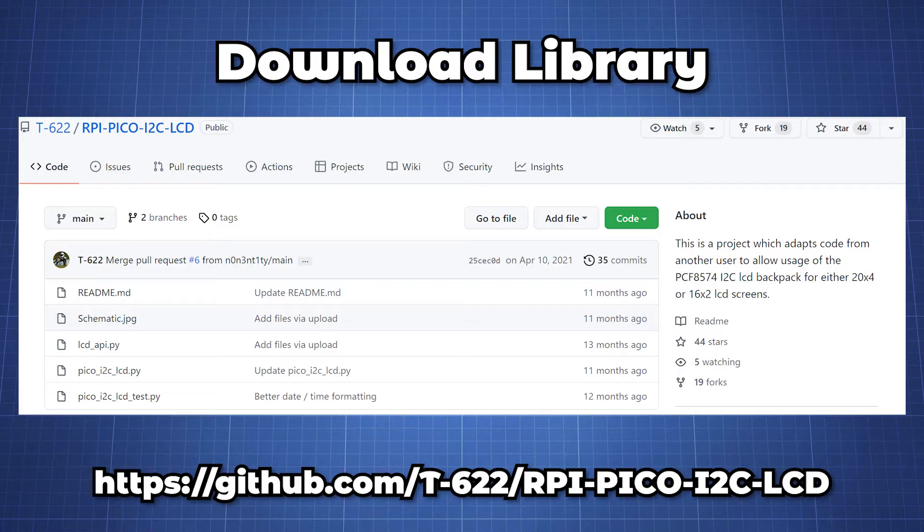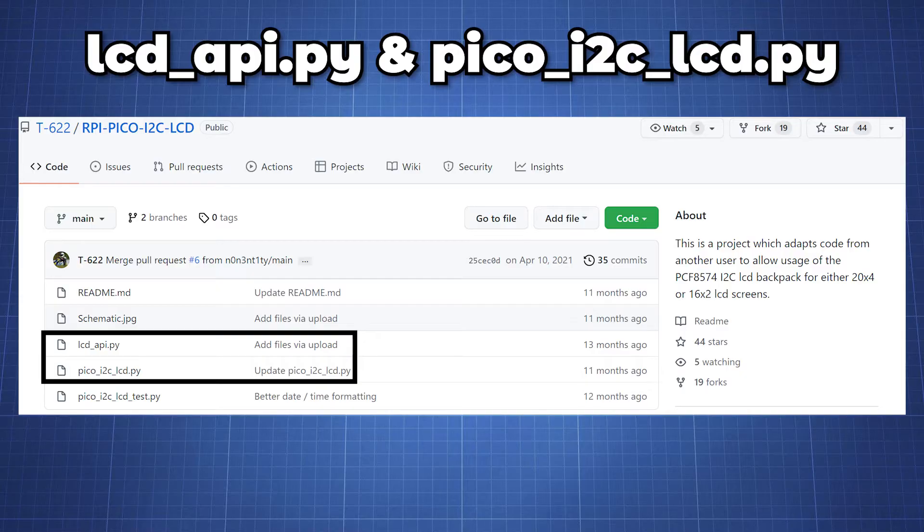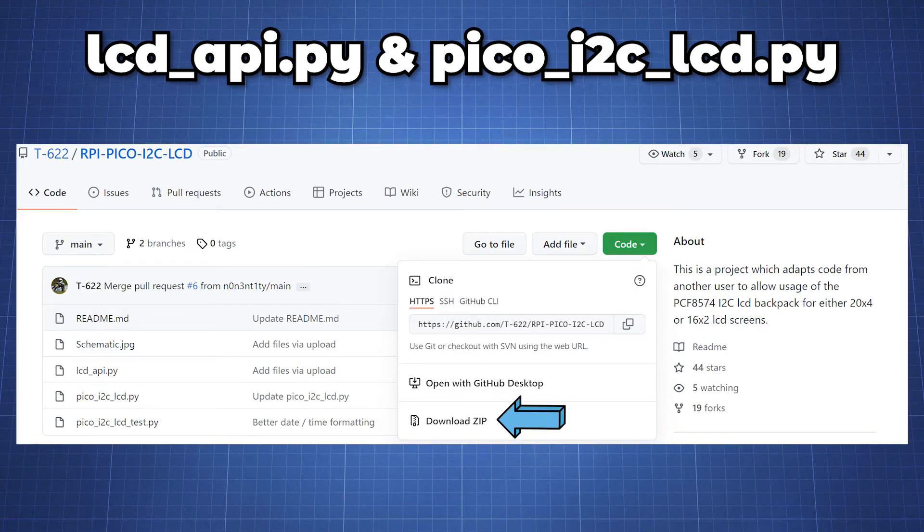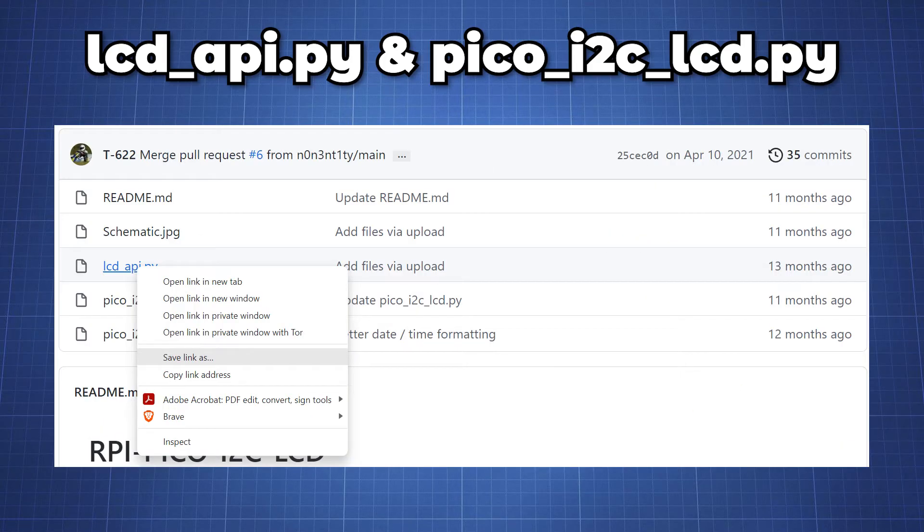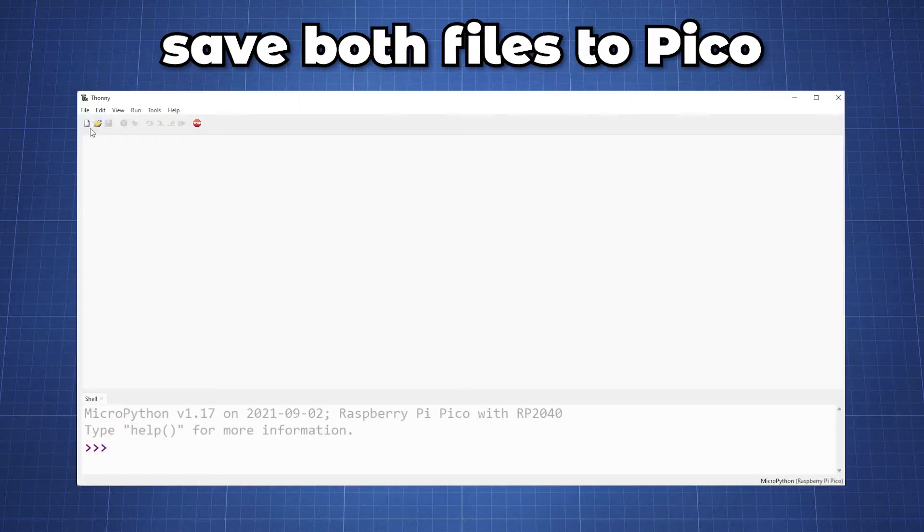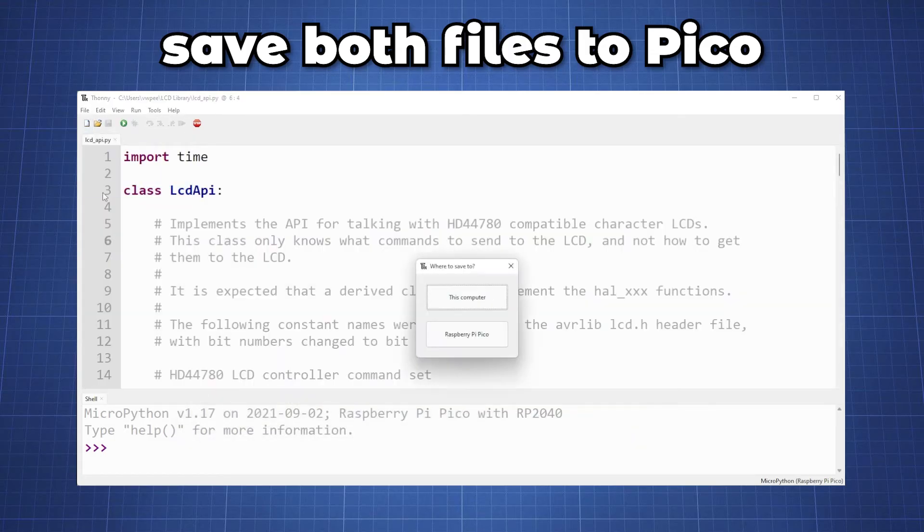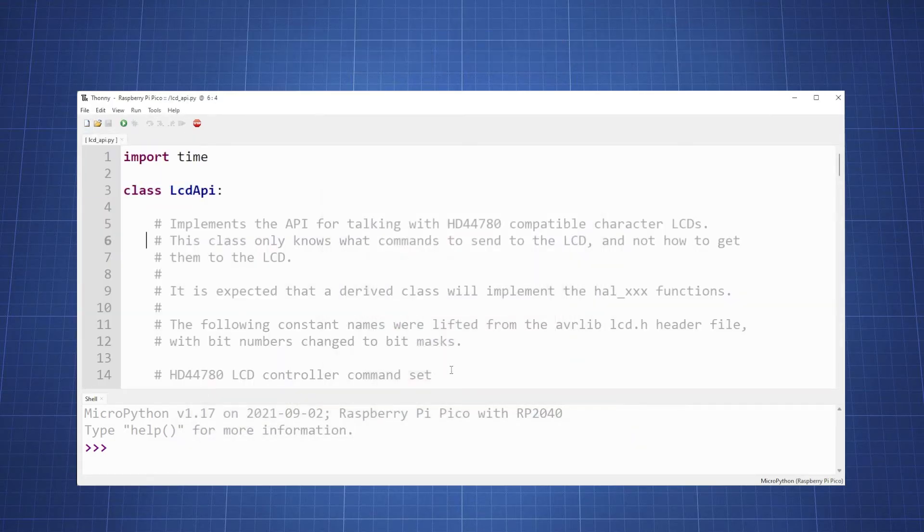Head on over to the GitHub repository of the user T-622 using the following link and grab these two files here which you will need to import. How you can do this is to download everything by clicking here on code, hitting the download zip button, or another option is to right click on a file and save link as and save it to your computer. Now open Thonny, click on file open, open both these files and save them on the Raspberry Pi Pico.